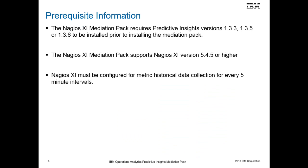The following is a list of prerequisites needed for the Nagios XI Mediation Pack. Predictive Insights versions 1.3.3, 1.3.5, or 1.3.6 must be installed prior to installing the Mediation Pack. The Nagios XI software must be configured for historical collection on the metrics at every 5-minute interval. The Mediation Pack supports Nagios XI version 5.4.5 or higher.